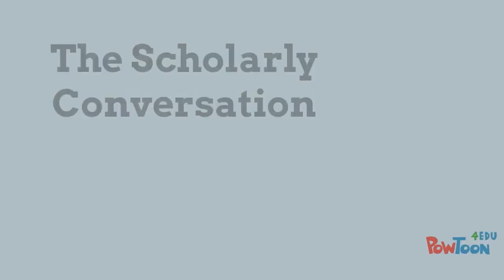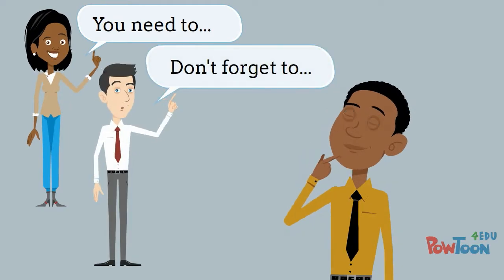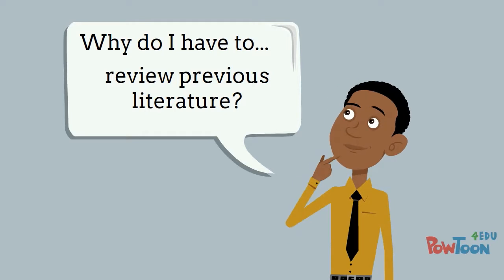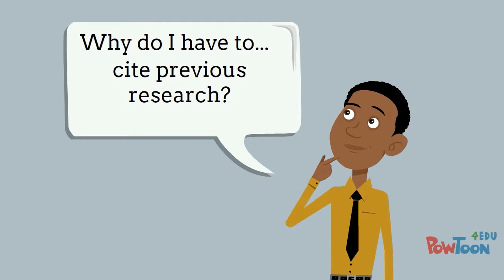As a social work major, Knox often struggled to understand why his professors wanted him to do certain things. Why did he always have to review the scholarly literature on his topic when he started a research project? Why did he always have to cite previous studies in his own work?